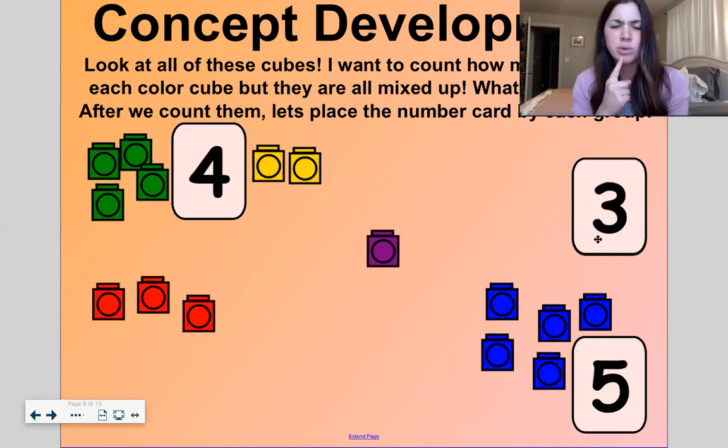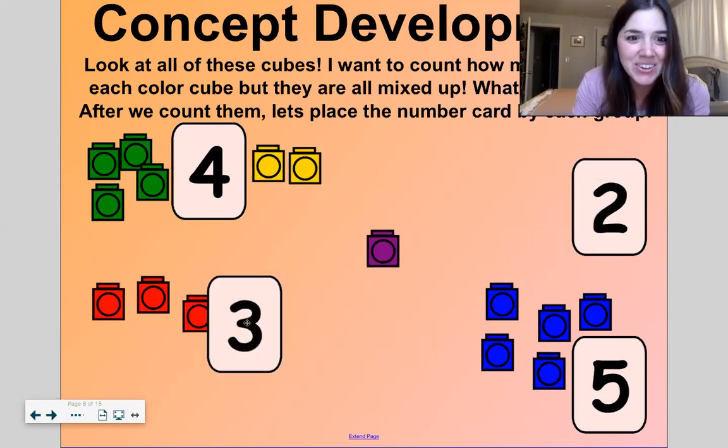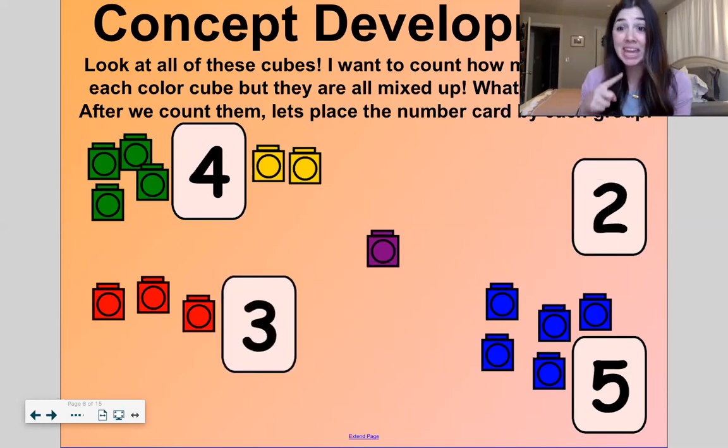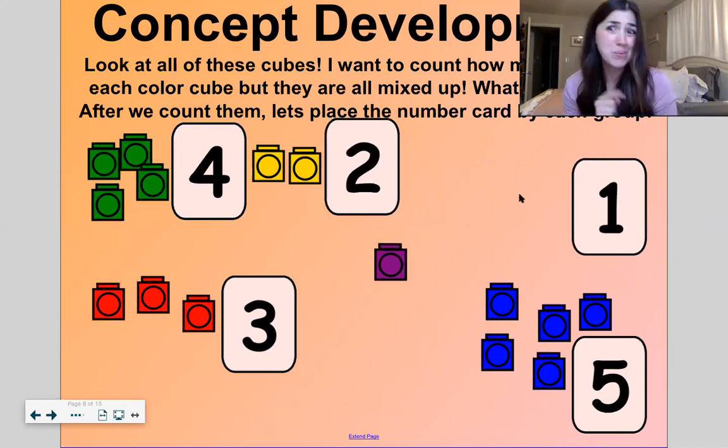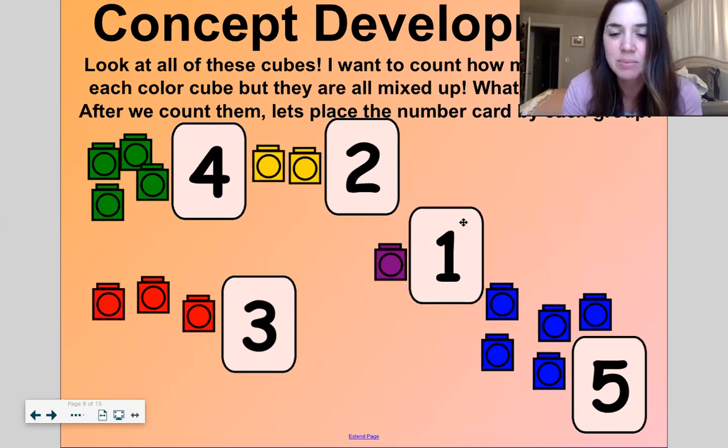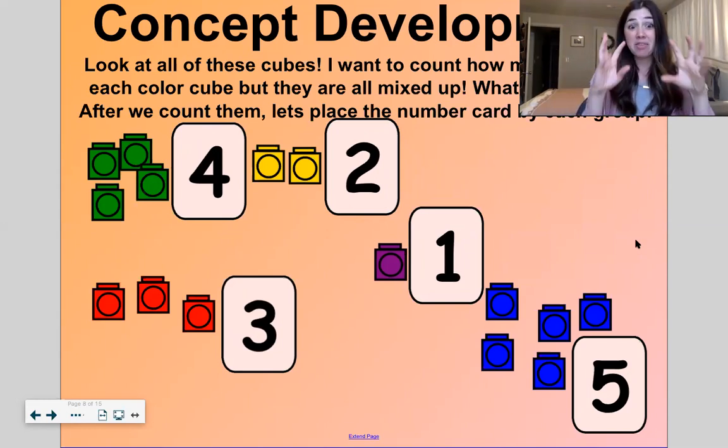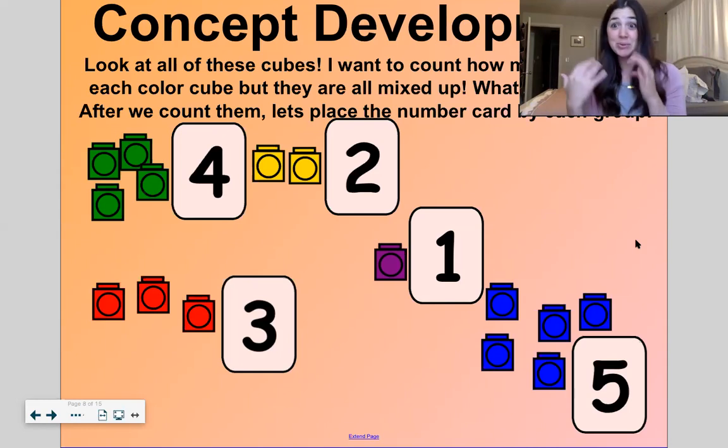Three. Which cubes are in a group of three? Red. Good. So I'm going to move red right there. We are labeling right now. Which group is in a group of two? That's two. Yellow. So let's slide yellow. And last but not least, which group only has one cube? Purple. So let's move this number right here. Wow. So we labeled our sets. We labeled groups of three, groups of four, group of two, group of one, and a group of five. Awesome. That's fun.